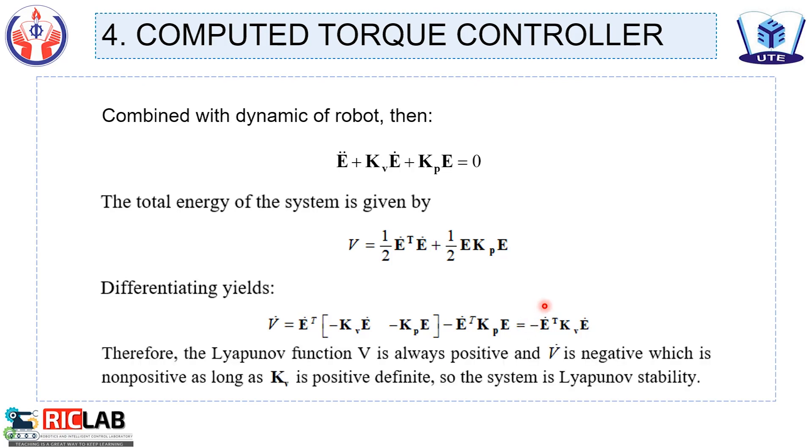Therefore, the Lyapunov function V is always positive and V dot is negative, which is non-positive as long as Kv is positive definite. So, the system is proved to be stable.